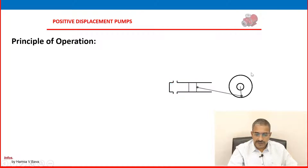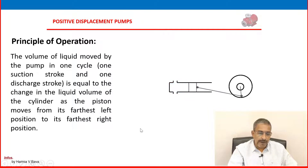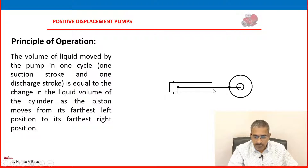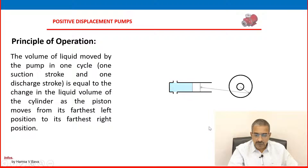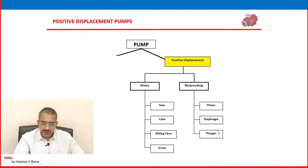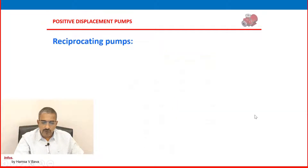Continuing the principle of operation: this is the driving mechanism and this is the pump area. The volume of liquid moved by the pump in one cycle — one suction stroke and one discharge stroke — is equal to the change in the liquid volume of the cylinder as the piston moves from its farthest left position to its farthest right position. Liquid is entering and leaving using the suction stroke. The piston moves to and fro inside the cylinder, driven by the driving mechanism. In the reciprocating pump category, we will go further into reciprocating pumps.